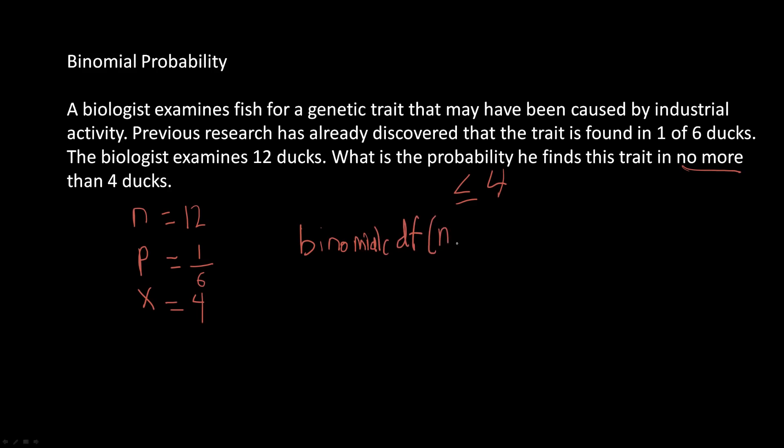So here we can just plug in the numbers. Binomial CDF, we have to plug in the 12, the 1 out of 6, and the 4 here. And the number that we end up getting will be 0.96365. This means that there's a 96.365% chance that he finds this trait in no more than 4 ducks.